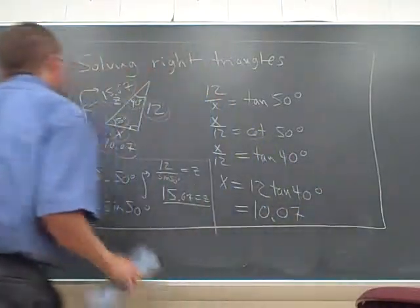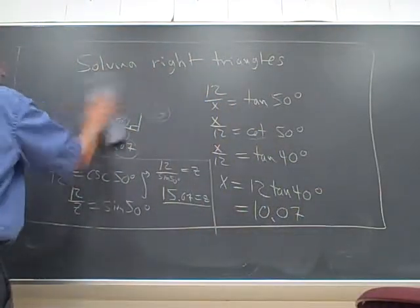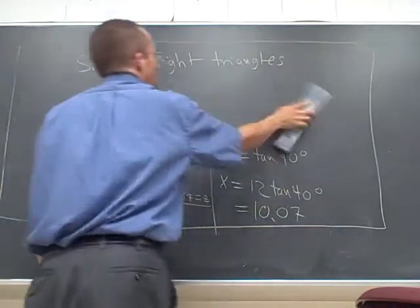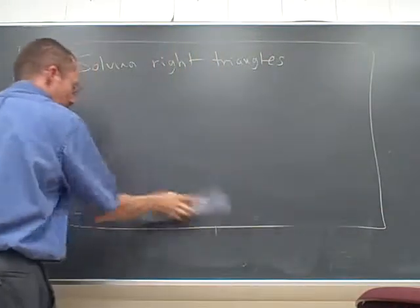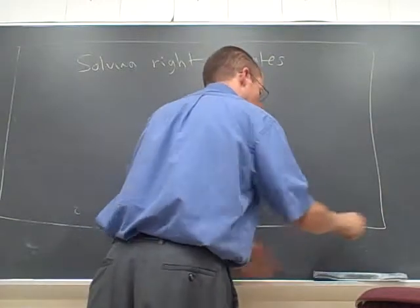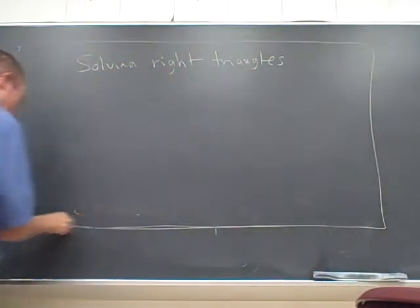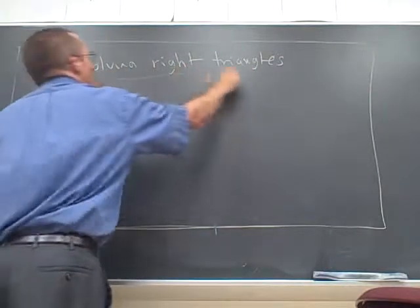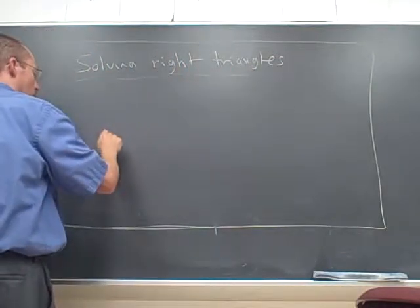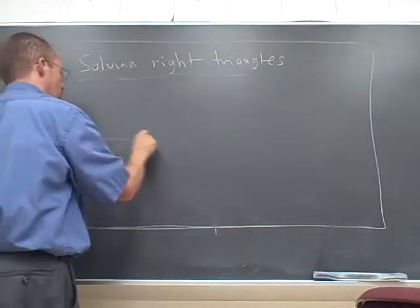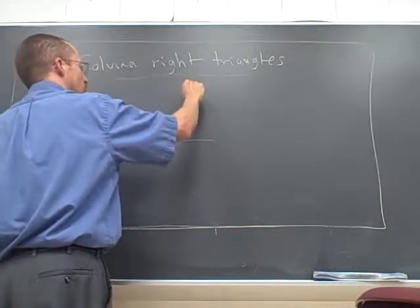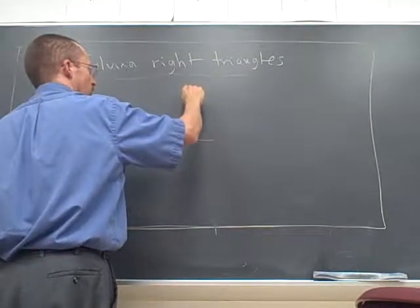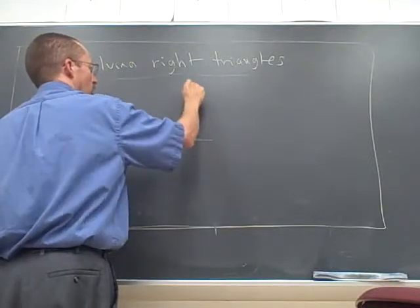That's just an example of solving the right triangle, going back to our basic understanding. Really pretty much review, depending on how much you did with it in algebra 2, geometry. There's a terminology in a word problem, the one word problem I assigned in the homework. It's that we have this building, the Empire State Building.